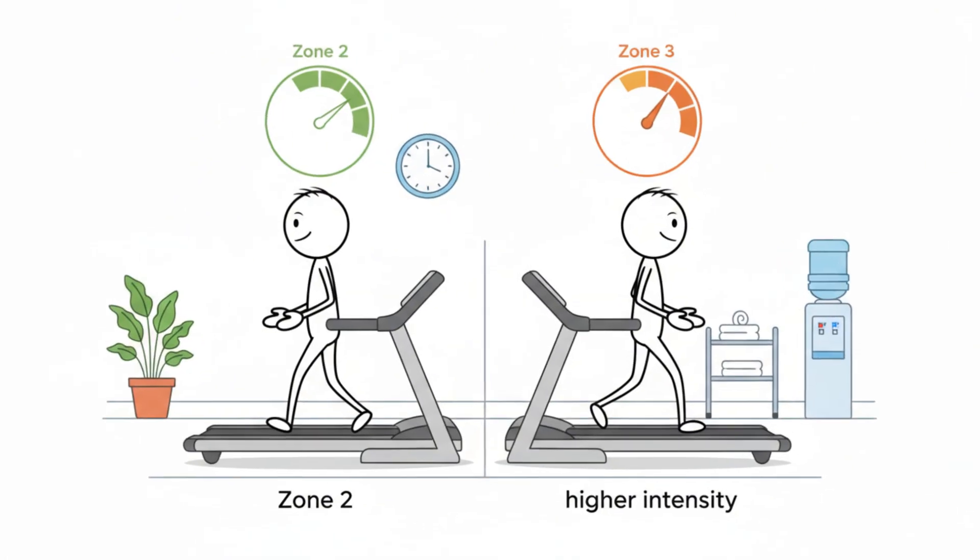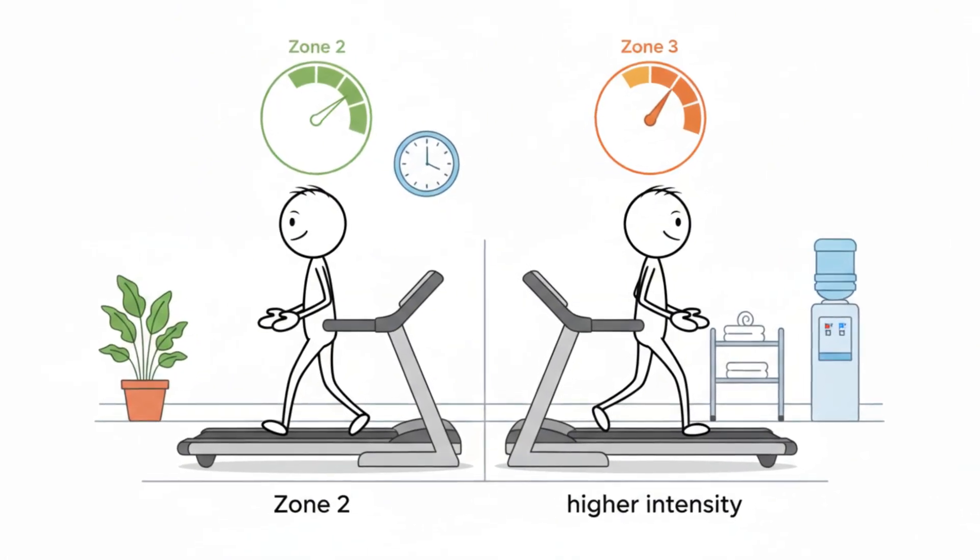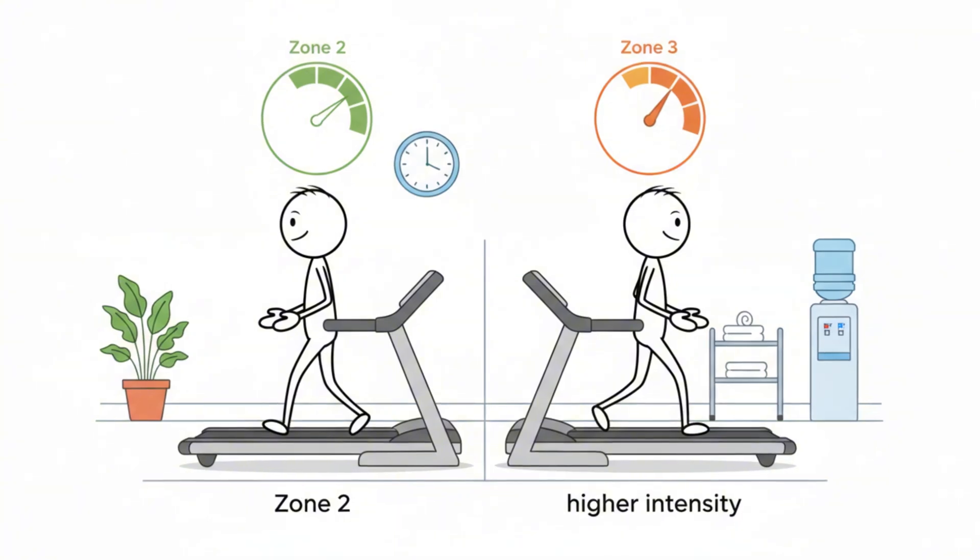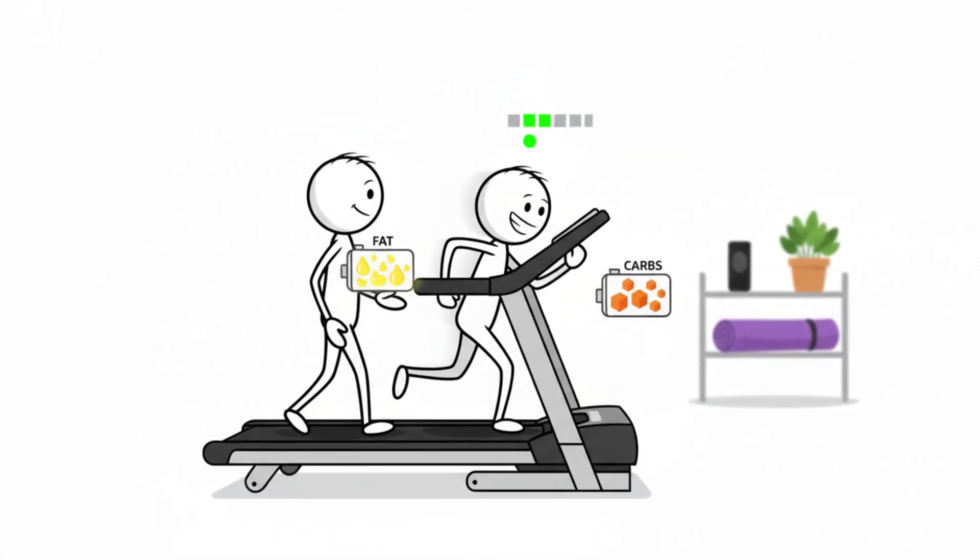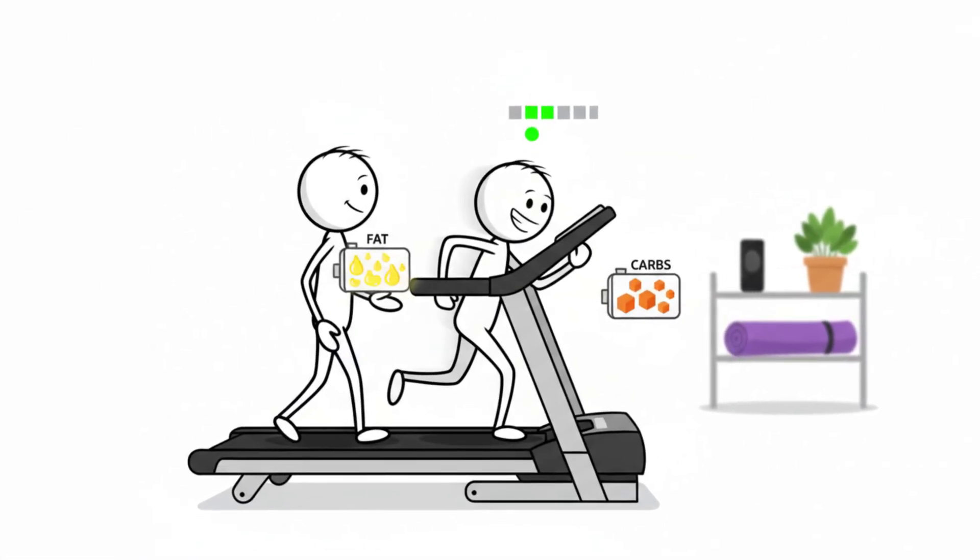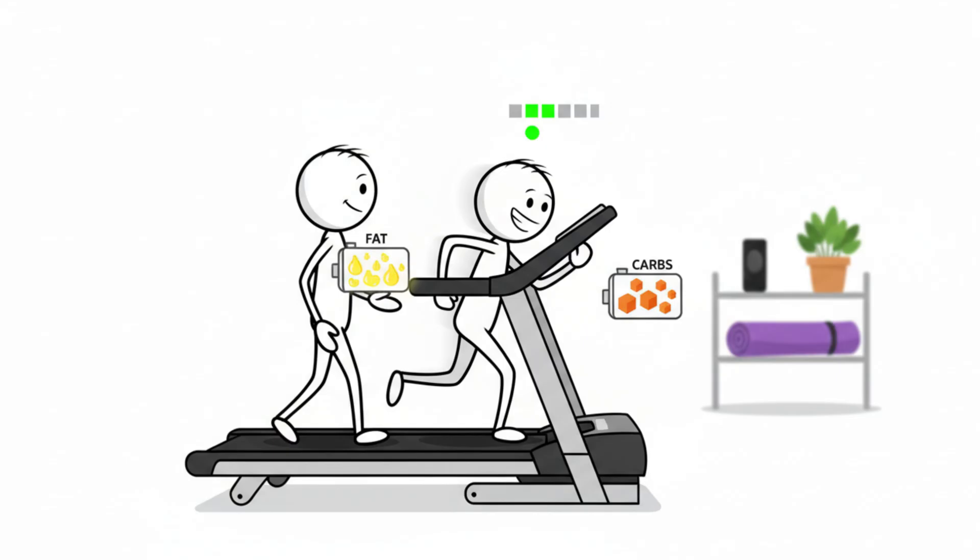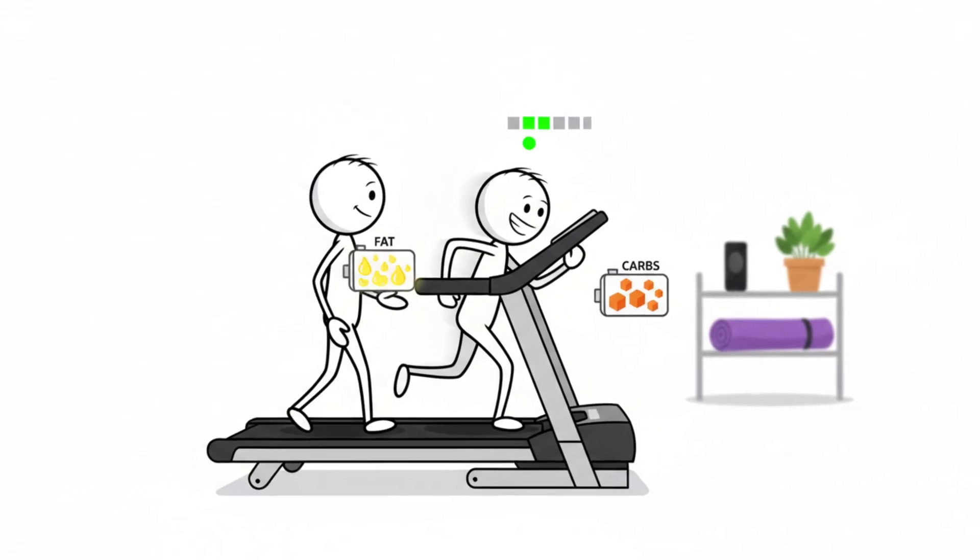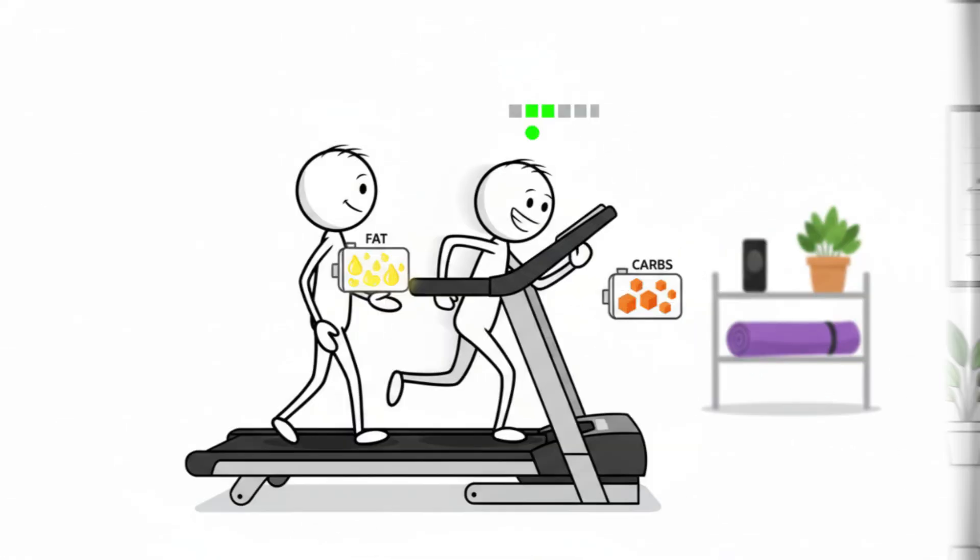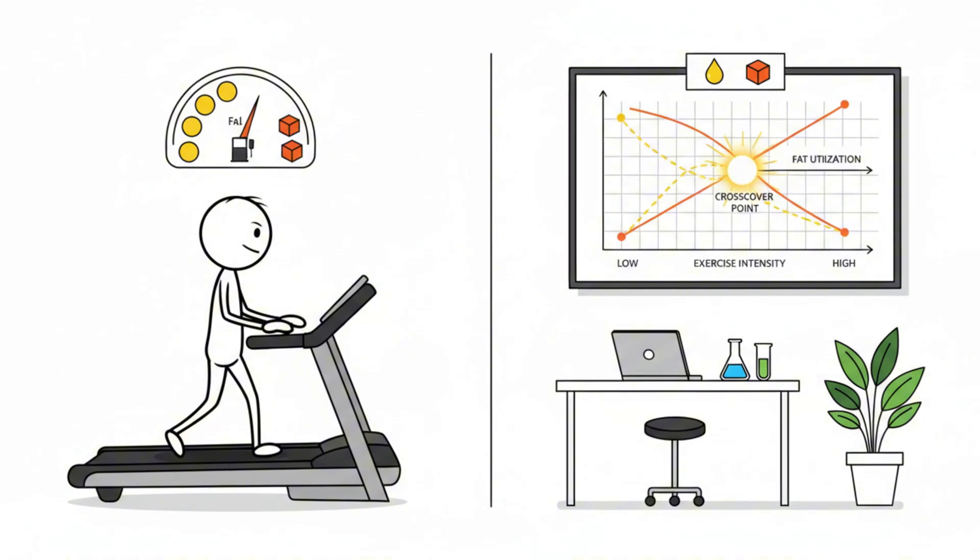Many people assume zone 2 is simply easy exercise, but the biggest mistake is accidentally slipping into a higher intensity. It often happens when enthusiasm kicks in and the pace increases just a little too much. The problem is that once you cross into zone 3, the body shifts toward carbohydrate dependence, which reduces the fat oxidation effect you're aiming for.